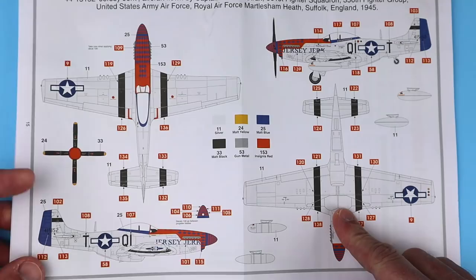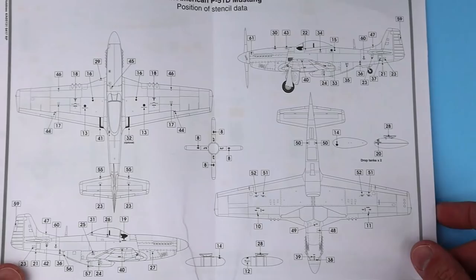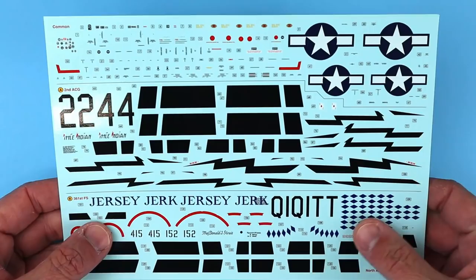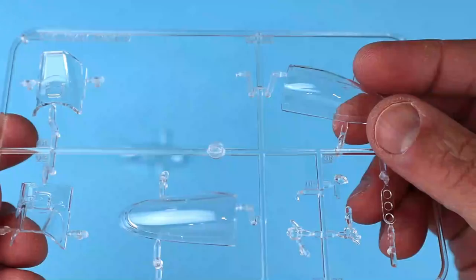There are markings for two different planes that are both really colorful. The decal sheet looks especially nice and if they perform like the others I've used recently, they will go down really well.